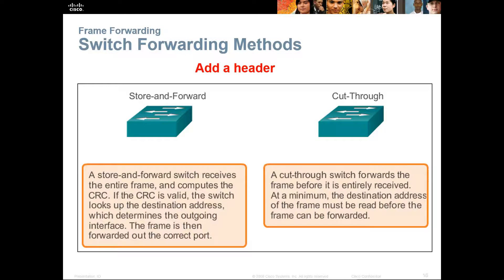There are two methods for forwarding frames: store-and-forward and cut-through. Store-and-forward takes the entire frame, verifies it to make sure it's valid first, and then forwards it to the correct port once the entire frame has been received. Cut-through sees the frame and just forwards it on — no error checking, it just forwards it. Store-and-forward checks for errors; cut-through does not. Cut-through, however, is faster, so when you have things like VoIP or more time-sensitive data, cut-through is the way to go.